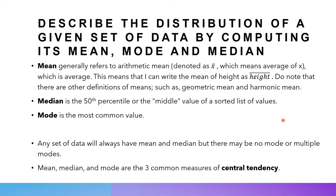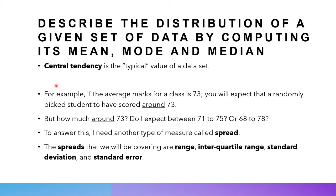For example, with the heights of all students in your class, you can definitely calculate the average height and the median height. But there may not be a mode height if all of you differ in height by at least one millimeter. Mean, median and mode are measures of what we call central tendency — that means what is the typical value of a data set. For instance, if the average marks of this class is 73, you will subconsciously expect a randomly picked student to score around 73.